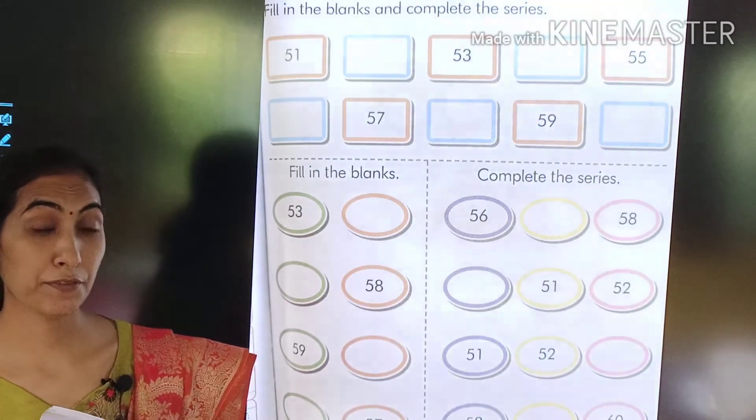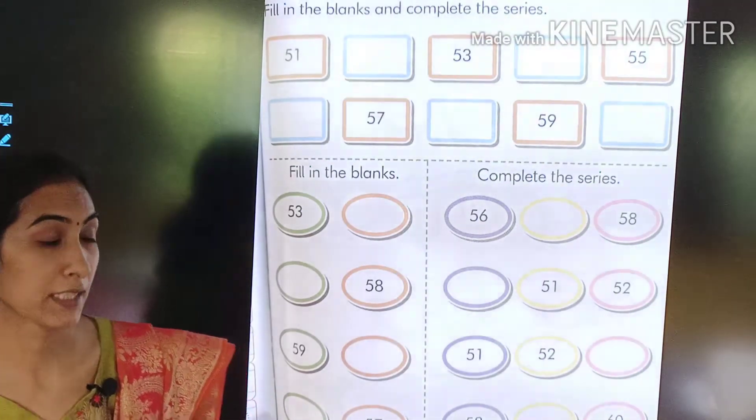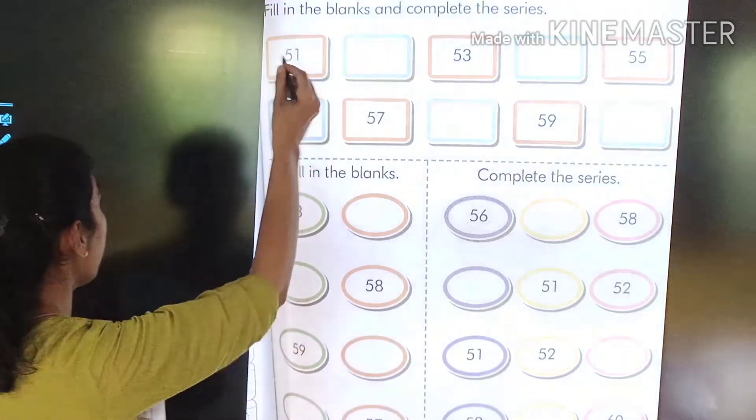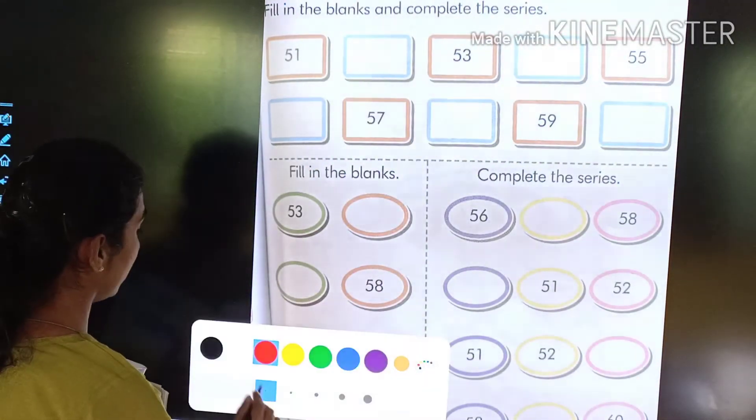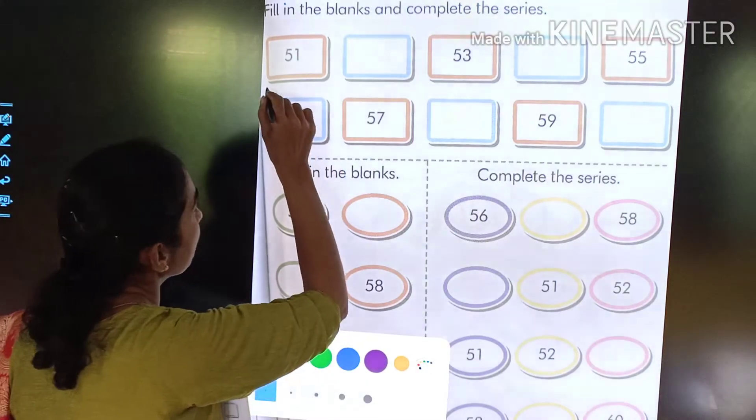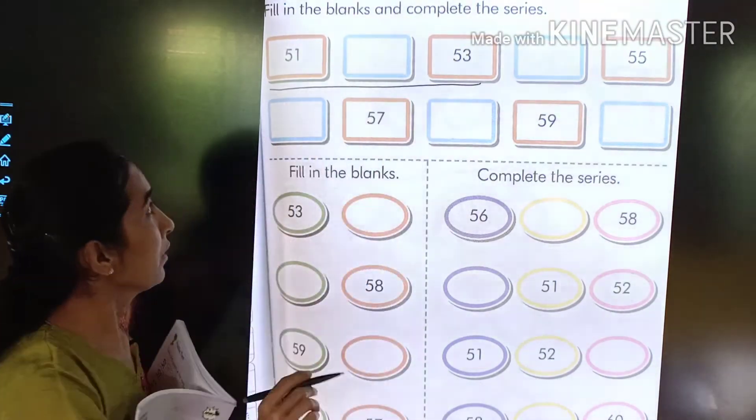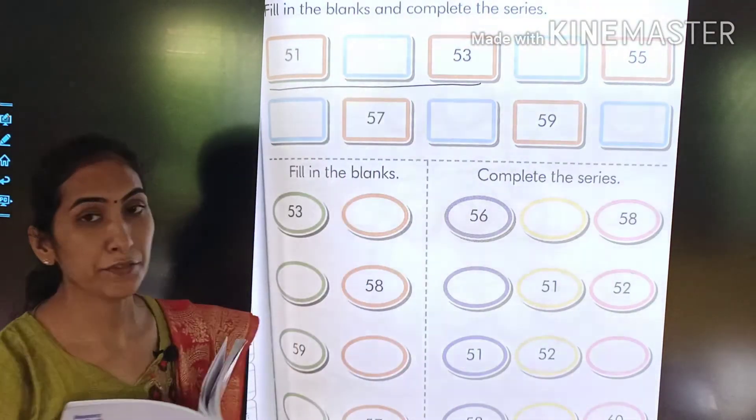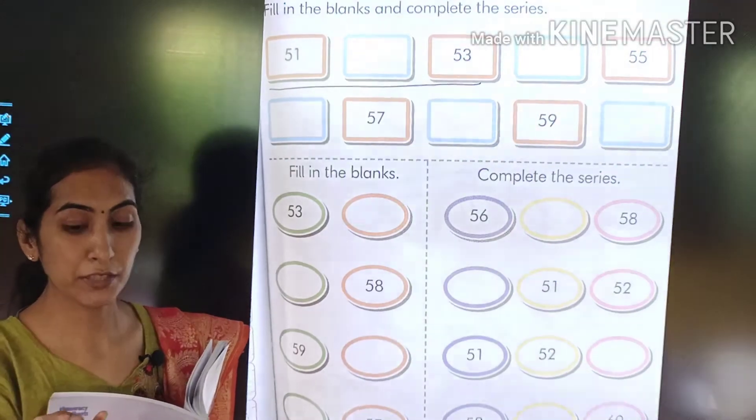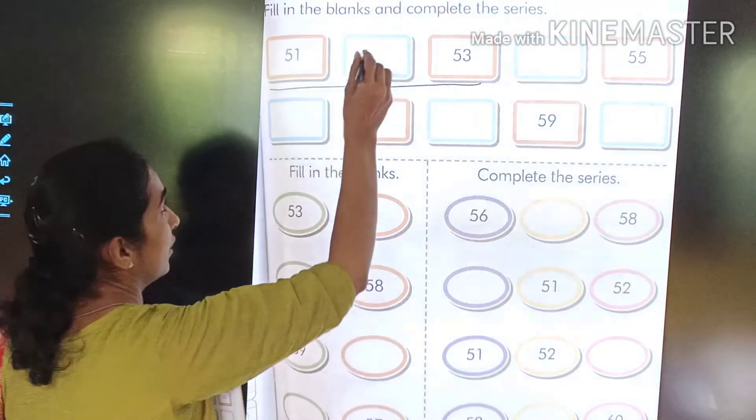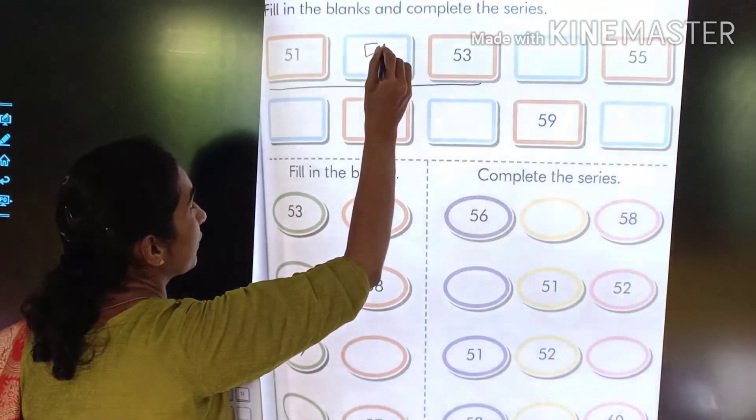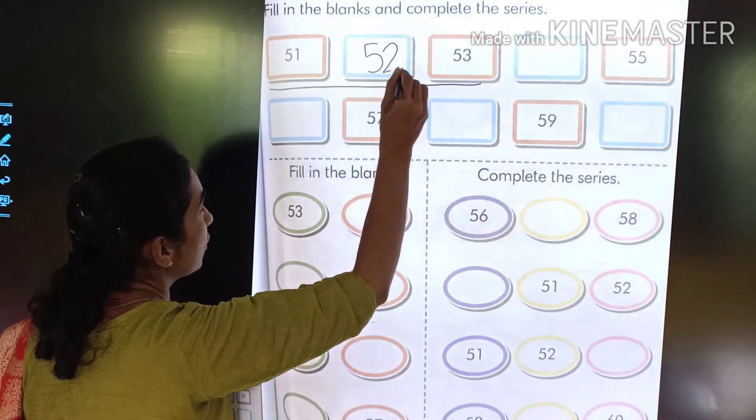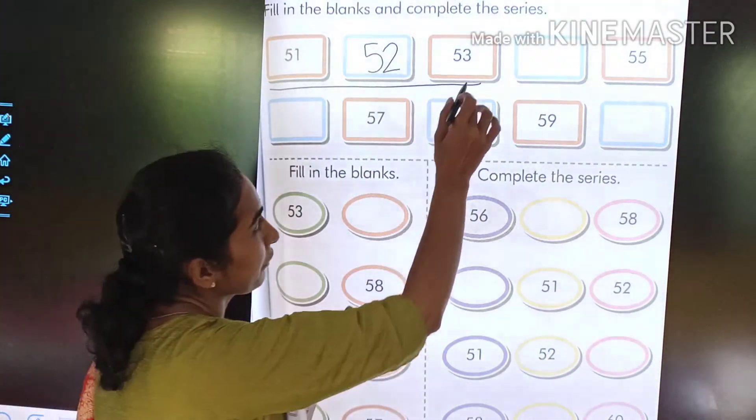From 51 to 60, so see, this is 51. What will come after 51? Or, this is 51 and this is 53. What will come between 51 and 53? 51, 52, 53. So here it will come 52.